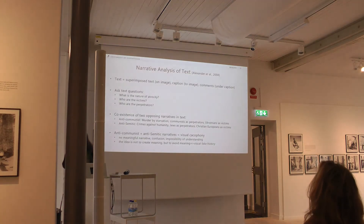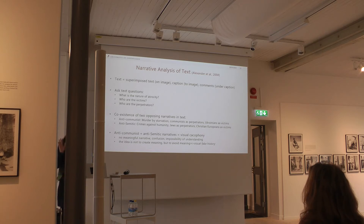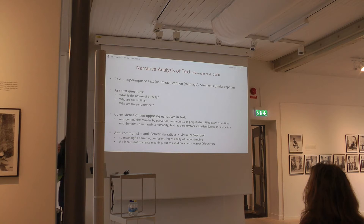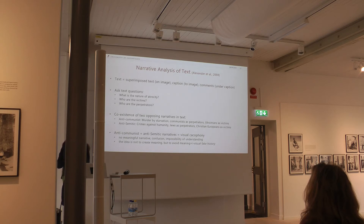Once I understood what kinds of historical events were used, I performed narrative analysis of text. By text I mean superimposed text on the image itself, the caption given by the person who posts the image, and also comments of all other users. I asked three questions in the spirit of cultural trauma theory from cultural sociology: What is the nature of atrocity in this text? Who are the victims? And who are the perpetrators?